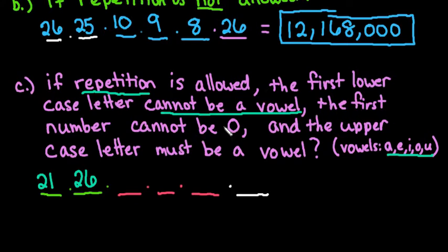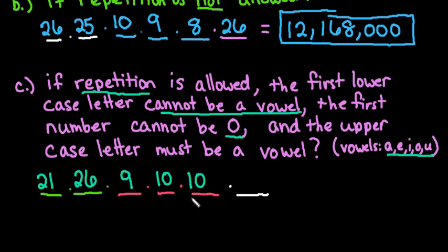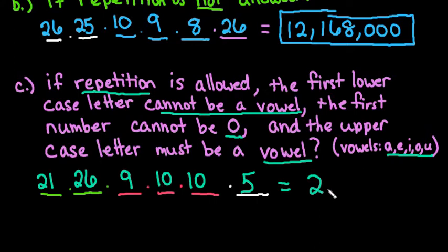We also have the stipulation that the first number cannot be zero, so there are only 9 choices for the first digit. The next two digits have no zero restriction, so there are 10 choices each. The last position — the uppercase letter — must be a vowel, so we only have 5 choices: capital A, capital E, capital I, capital O, or capital U.